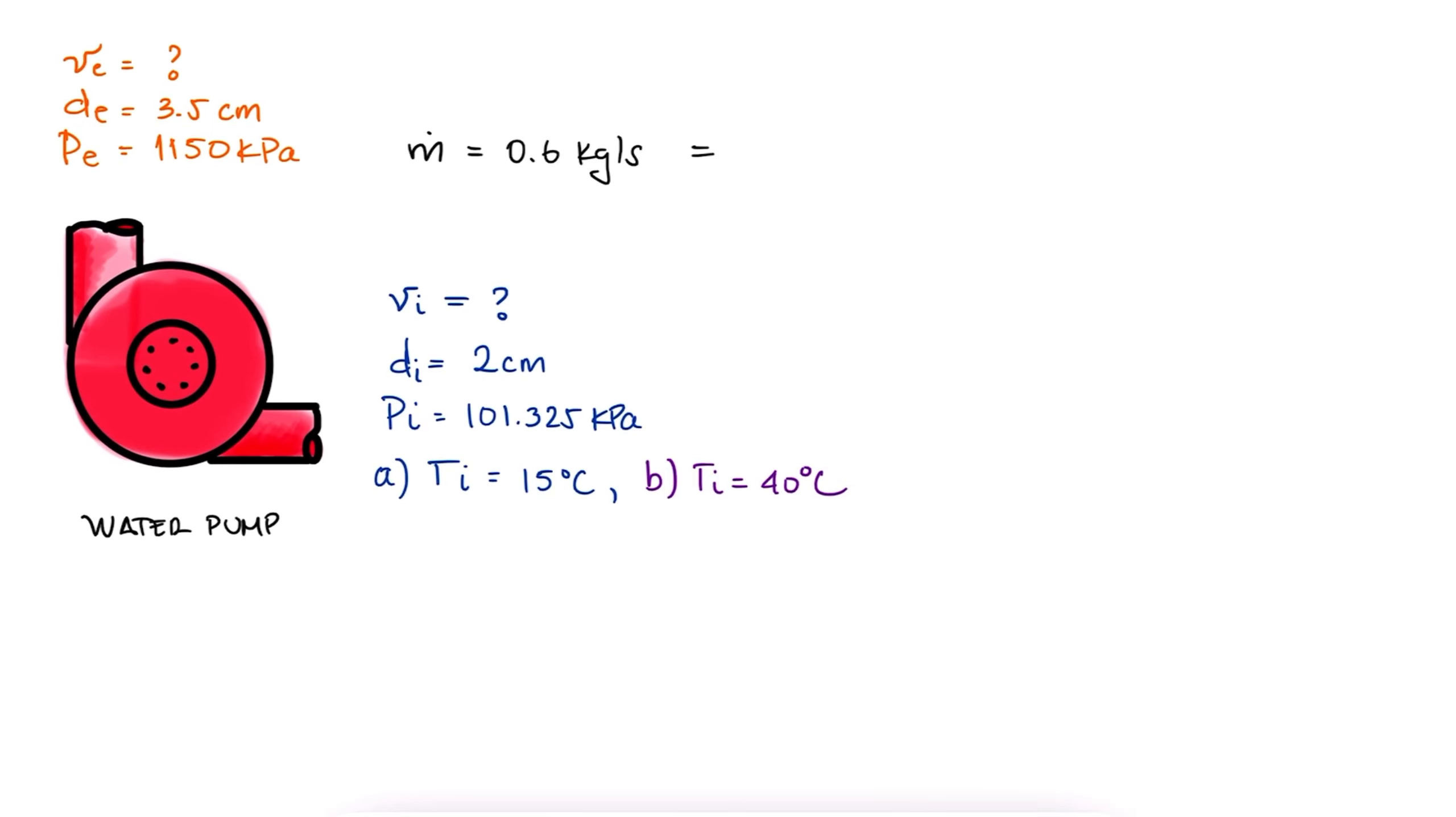Since the mass flow rate is equal to velocity times area over specific volume, the velocity is equal to mass flow rate times specific volume over area. We can write the area in terms of the diameter, and since we have the diameter and the mass flow rate, all that's left is looking up the specific volume.